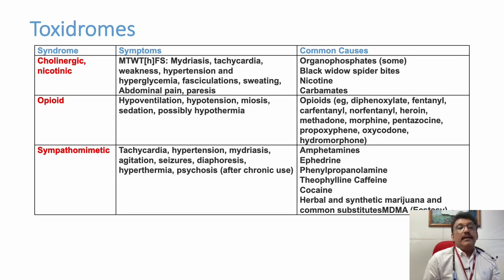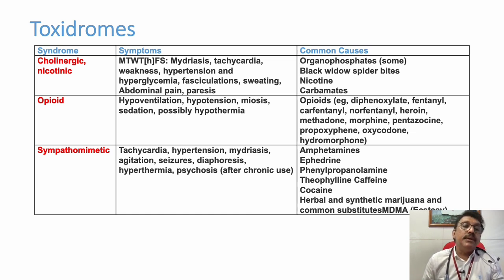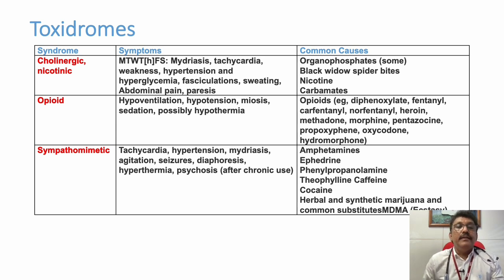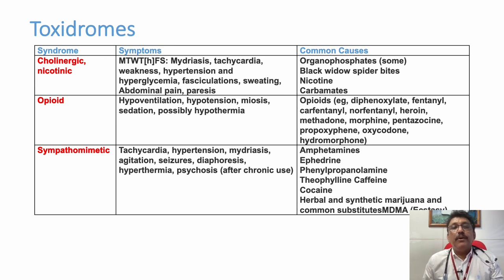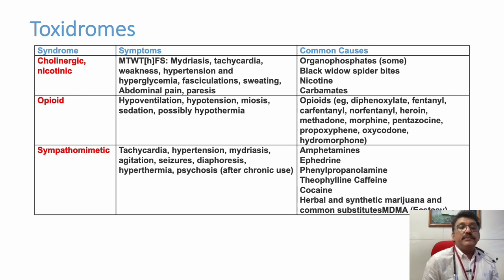Cholinergic nicotinic actions include mydriasis, tachycardia, weakness, hypertension, hyperglycemia, fasciculations, sweating, abdominal pain, and paralysis. This is essentially the opposite of the muscarinic findings. Some patients with organophosphate poisoning can present with tachycardia and mydriasis because OP compounds can produce both nicotinic and muscarinic clinical findings, though bradycardia and small pupils predominate. Nicotine poisoning and black widow spider bites are now rare in clinical practice.